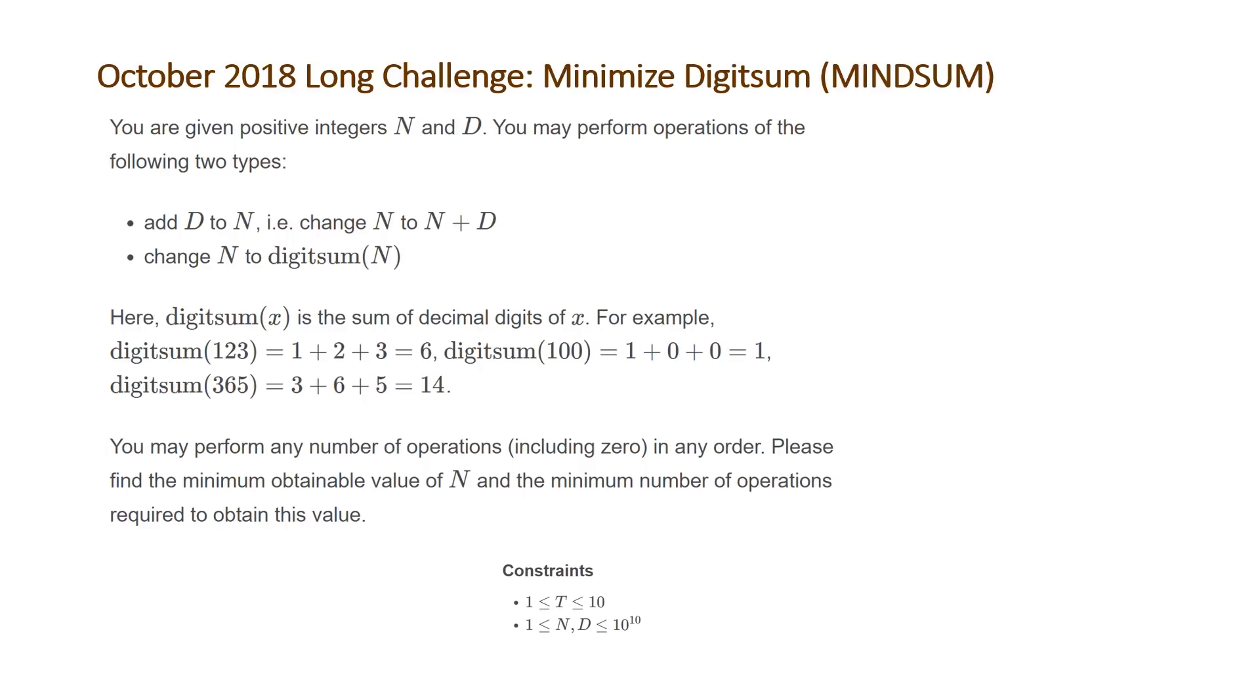You may perform any number of operations, including 0, in any order. Please find the minimum attainable value of n and the minimum number of operations required to obtain this value. The constraints for this problem are that t, the number of test cases, will be between 1 and 10, and the values of n and d will be between 1 and 10 to the 10.